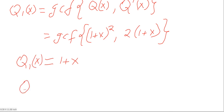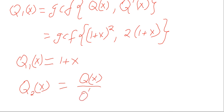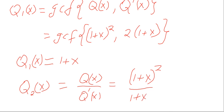Then we find Q2(x) as Q(x) divided by Q1(x). This will be (1+x)² divided by (1+x), which gives us (1+x). So we see that both Q1 and Q2 are polynomials of degree 1.